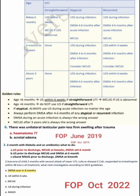The golden rule: remember, age less than 6 months, we do ultrasound within 6 weeks. If straightforward UTI, then MCUG if ultrasound is abnormal. Age more than 6 months, do not use ultrasound if straightforward UTI. If atypical, always use ultrasound during acute infection, no matter the age. Always perform DMSA after 4 to 6 months of any atypical or recurrent infection. DMSA during an acute infection is always the wrong answer. MCUG after 3 years old is always the wrong answer.